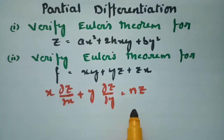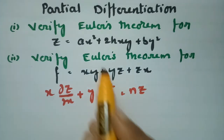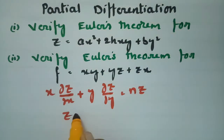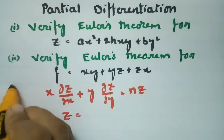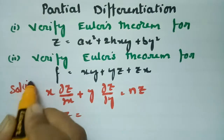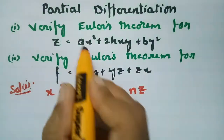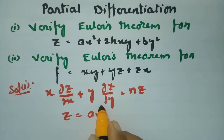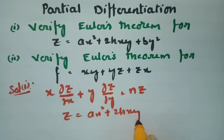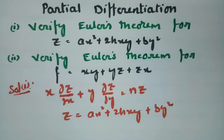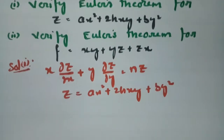This is how we have to verify Euler's theorem. For solution 1, z is given as ax² plus 2hxy plus by². Now I have to make derivatives with respect to x as well as with respect to y.